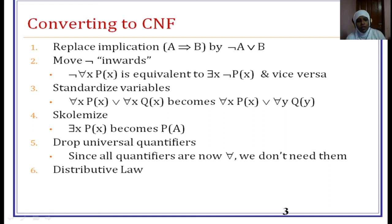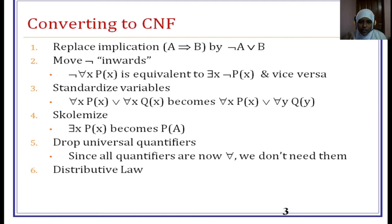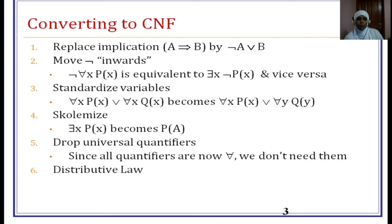Fourth rule: we have to remove all quantifiers. First, we try to remove the there-exists quantifier. This process is known as Skolemization. The existential quantifier talks about a fact that is true for very few people — some of the people in the group. To prove for which person or object the statement is true, that object name can be written directly inside X. This process is known as Skolemization.